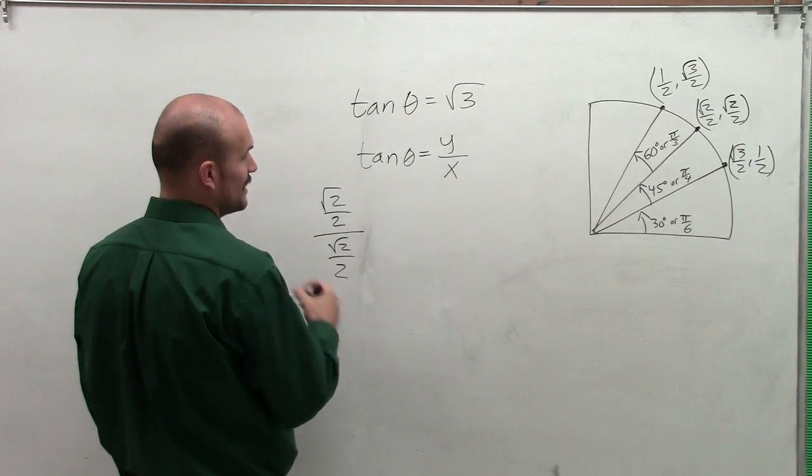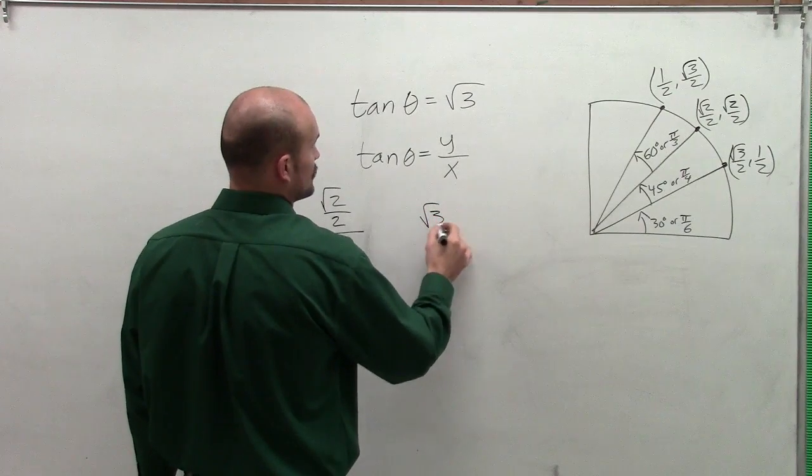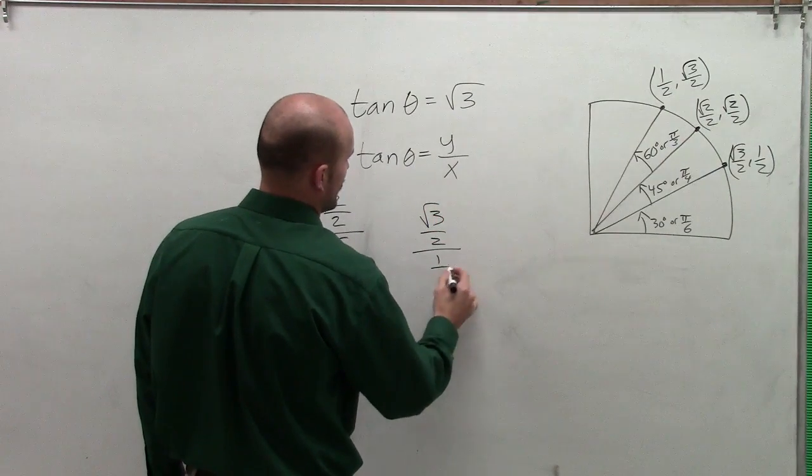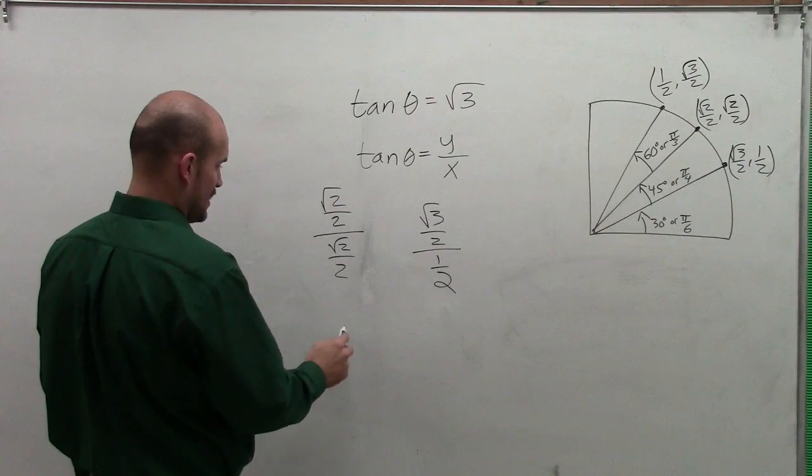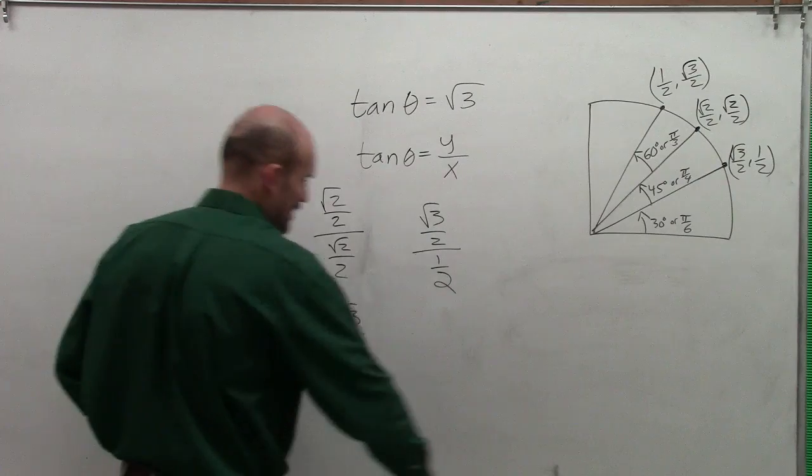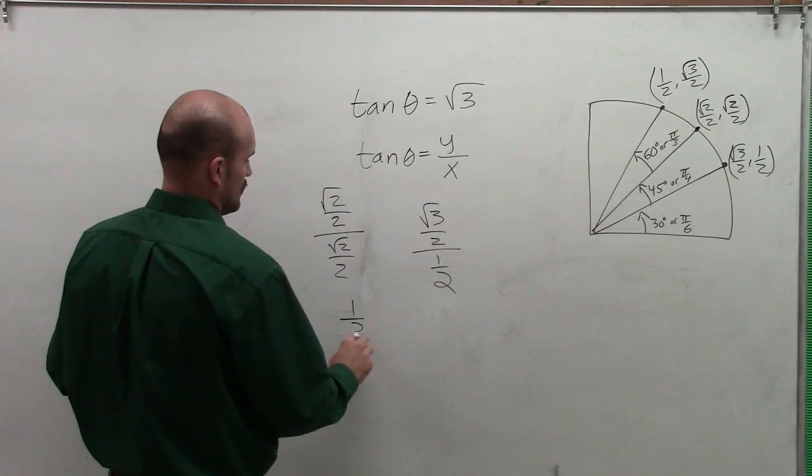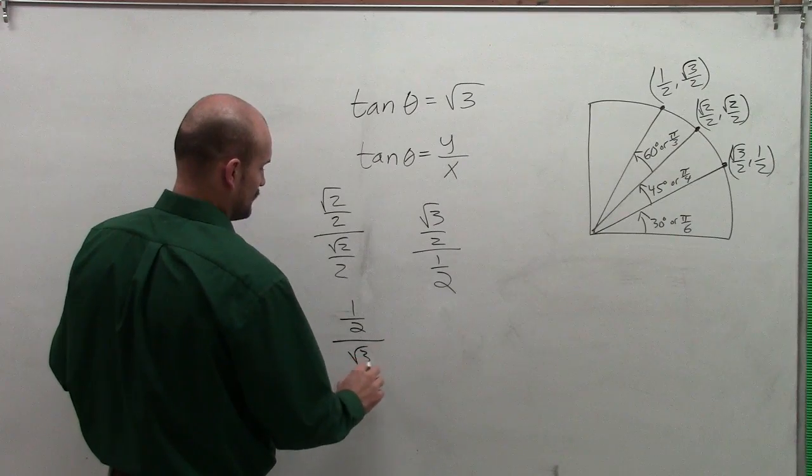So therefore, I have my y over my x for here. Then I could also do square root of 3 divided by 2 divided by 1 half. And then also I have, I'm sorry, 1 half divided by square root of 3 divided by 2.